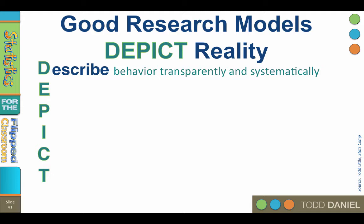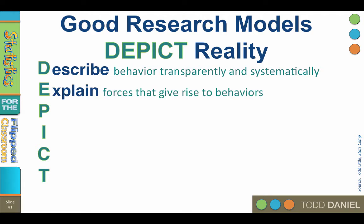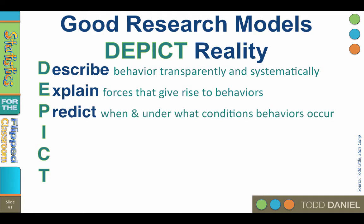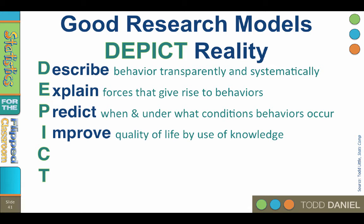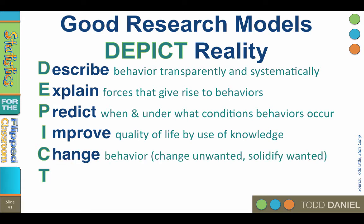Using the scientific method to model reality allows us to describe behavior transparently and systematically, so that we are clear about what we study. Explain the forces that give rise to behaviors, so that we can predict when and under what conditions behaviors will occur in the future. Improve quality of life by the use of knowledge, because the more that you eat from that tree of knowledge, the better. Change behavior — perhaps change unwanted behaviors, or reinforce wanted behaviors — and finally, test all of the above.